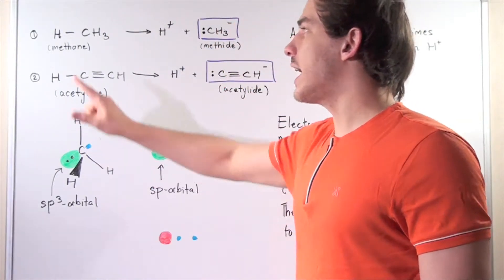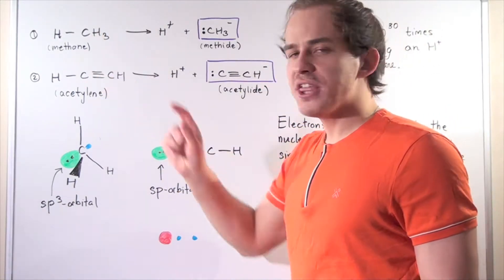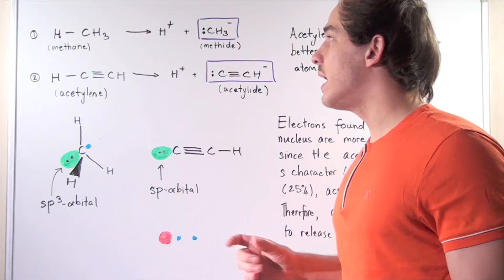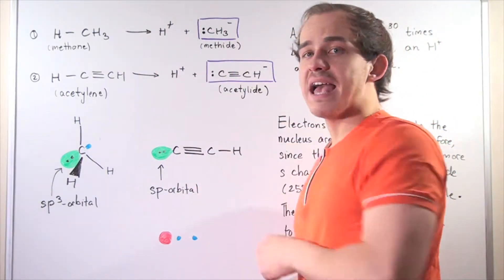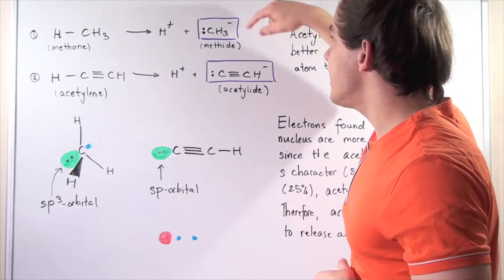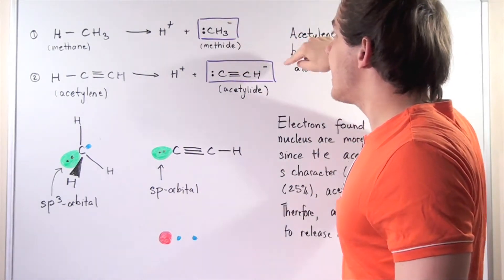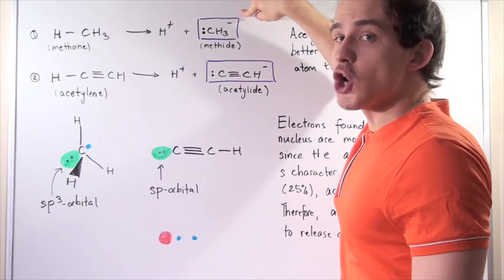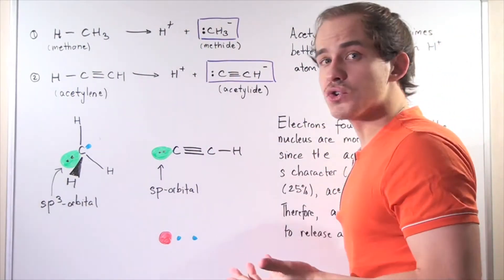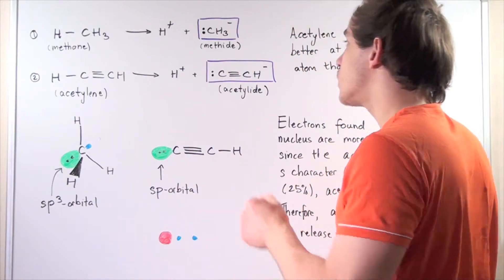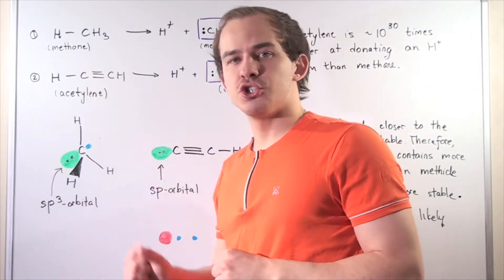In reaction 1, we have a methane molecule dissociating and donating an H⁺ atom, also creating a methide anion. This methide has a net charge of negative 1 because it has a lone pair of non-bonding electrons found on the carbon.